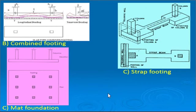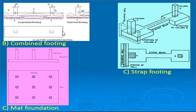When we come to combined footing, it is provided for two or more columns. For two columns, there are two types: slab type combined footing and slab-and-beam type combined footing. There is also strap footing, in which two isolated footings are connected by a strap beam.